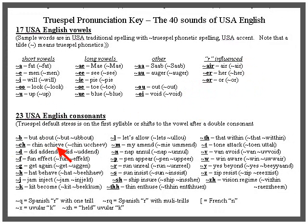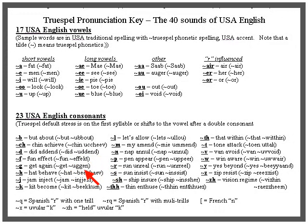CH: 'chin' and 'achieve' — the double C indicates the stressed syllable 'chieve.' D: 'did' and 'addend' — 'dend' is stressed. F: 'fun' and 'effect' — 'fect' is stressed. G: 'get' and 'again' — 'gen' is stressed. H: 'hat' and 'behave' — 'have' is stressed. J: 'jam' and 'inject' — 'ject' is stressed.